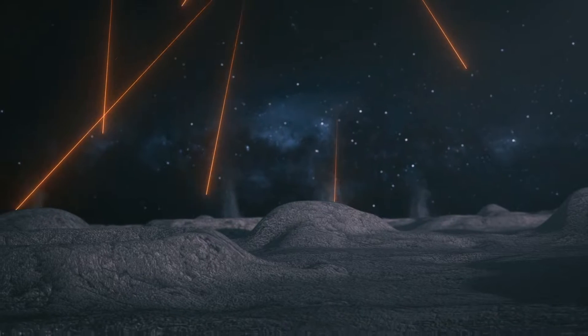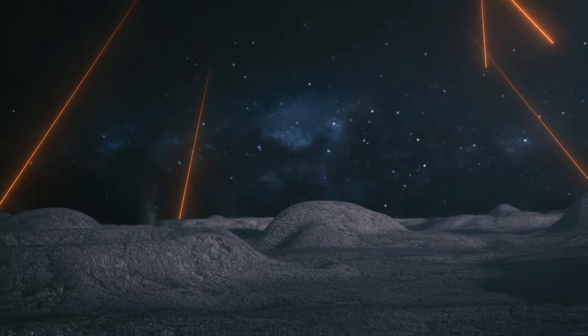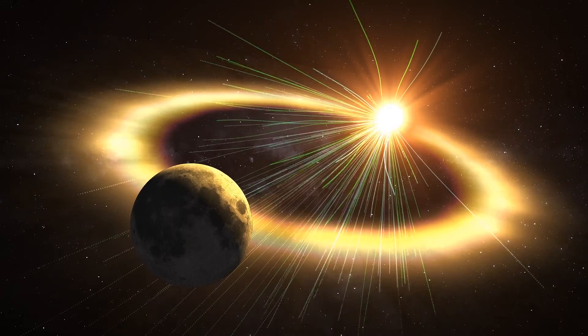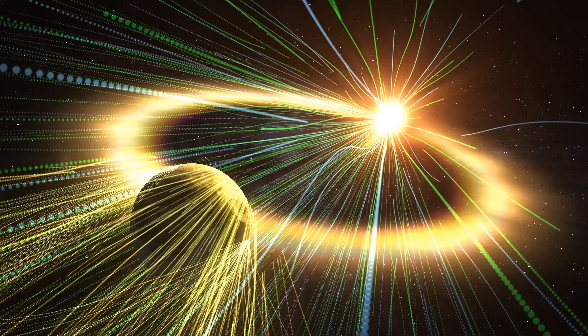Because the Moon lacks an atmosphere to protect it, it is constantly bombarded with meteorites, many of them no larger than a speck of dust. When meteorites hit the Moon's surface, particles of sodium are blasted into orbit.